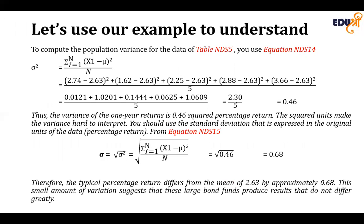For our example, the population mean was calculated as 2.63. Computing the squared differences (x minus mu) squared for all values and summing them gives 2.30, which divided by 5 equals 0.46. Thus the variance of this one-year return is 0.46 squared percent. Since the squared unit makes variance hard to interpret, we use the standard deviation, which is the square root of 0.46, coming out as 0.68.